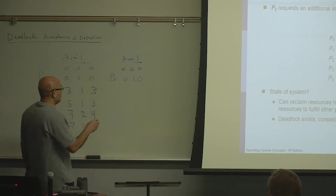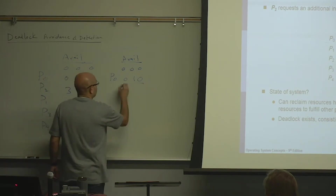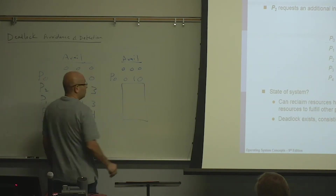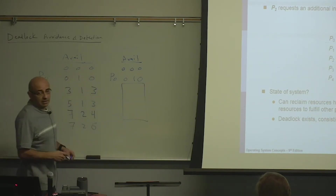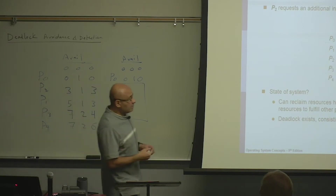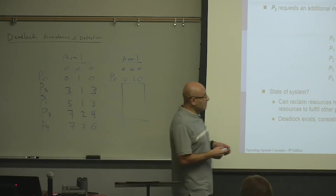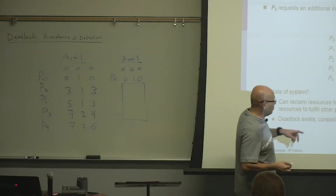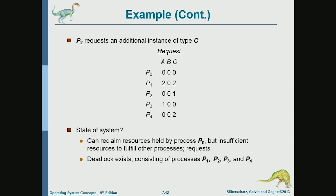We can't satisfy any requests. So what does this mean? We have a deadlock. The deadlock involves P1, P2, P3, and P4. P0 is not in the deadlock.